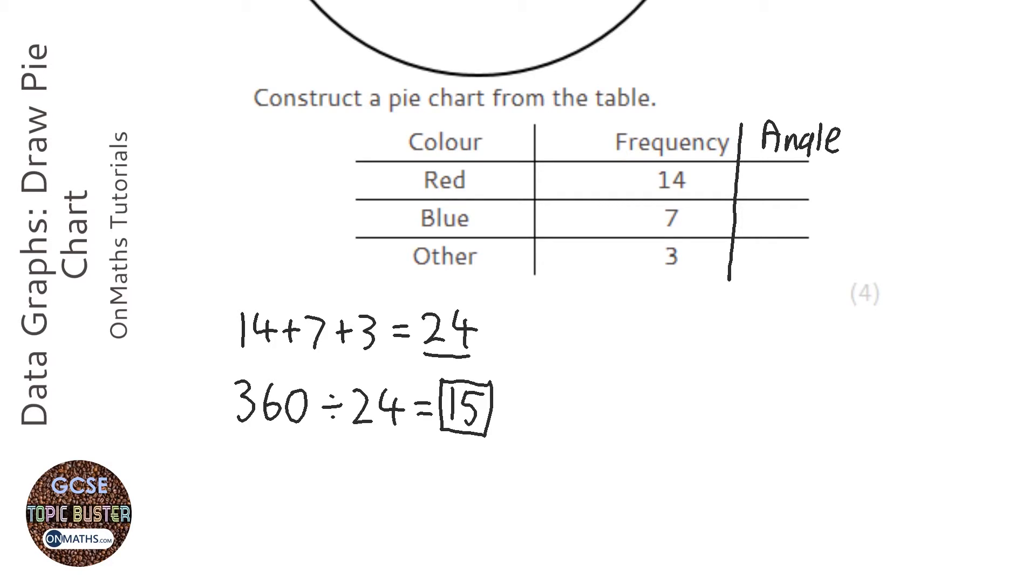And I'm going to do 14 times 15. And it's 210 degrees. 7 times 15 is 105 degrees. And 3 times 15 is 45 degrees.